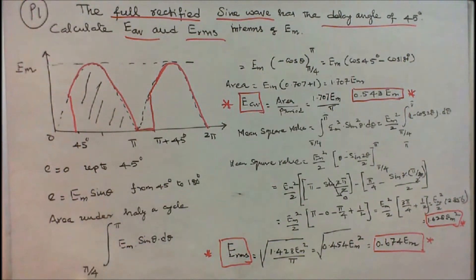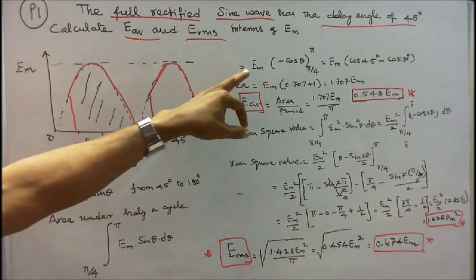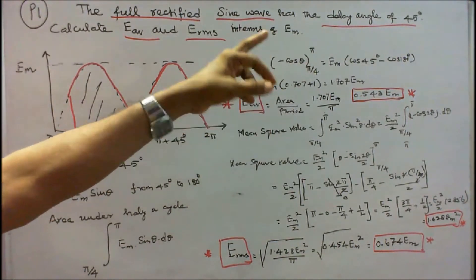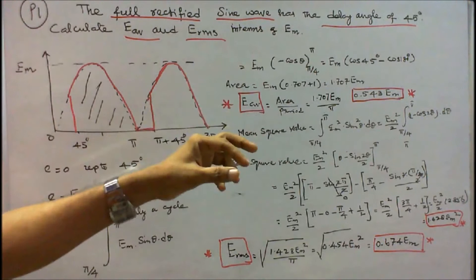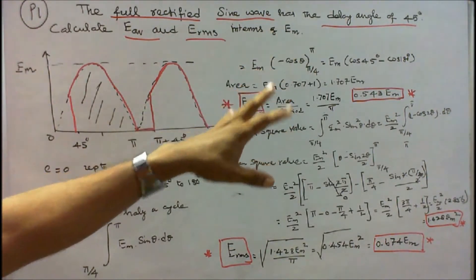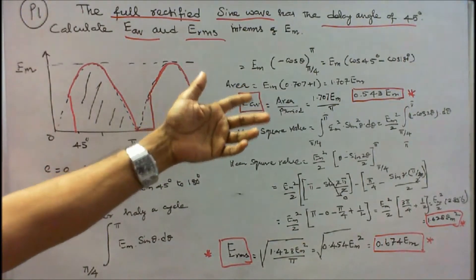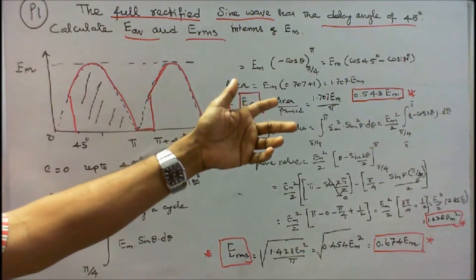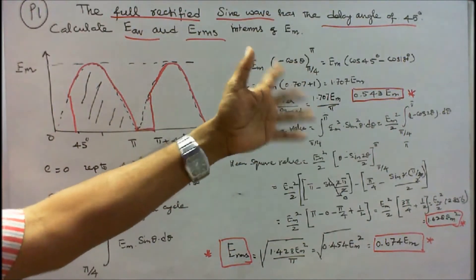Integral from pi/4 to pi of EM times sine theta d-theta. Integration of sine theta is minus cos theta. That equals EM times minus cos theta evaluated from pi/4 to pi. Substituting the limits, the area equals 1.707 EM. Therefore, E average equals area divided by period: 1.707 EM divided by pi, which equals 0.543 EM.